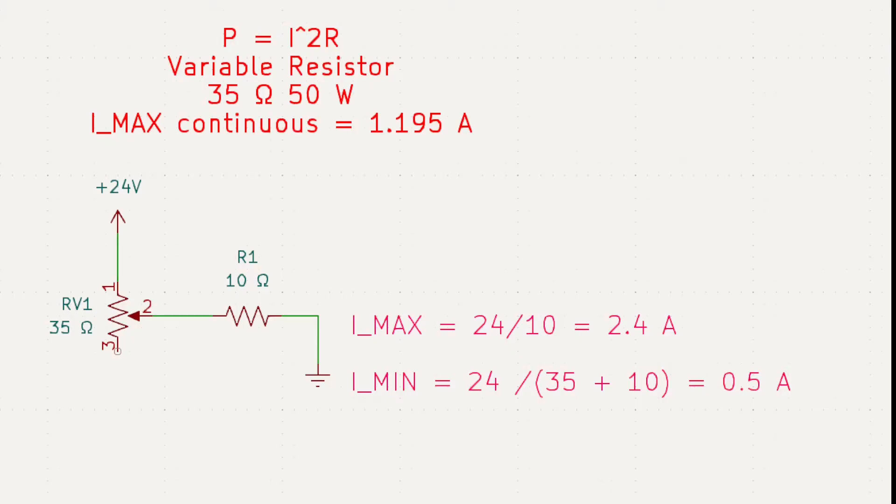Again, that is a restatement of power is equal to I squared R, and the fact that we have a 35-ohm, 50-watt resistor.